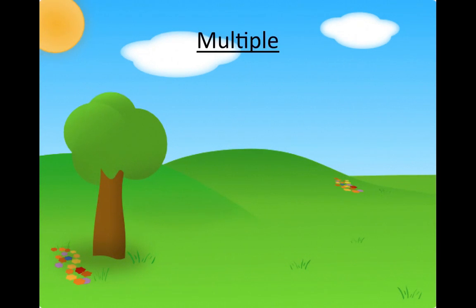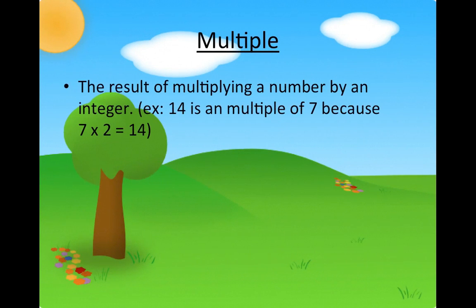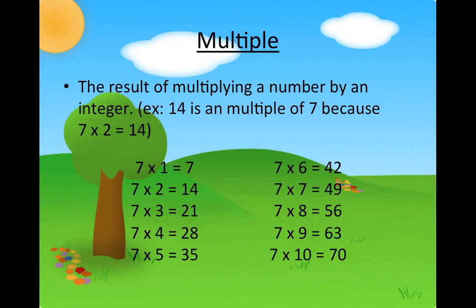Multiple. A multiple is the result of multiplying a number by an integer. For example, 14 is a multiple of 7 because 7 times 2 equals 14. You can see in the following examples: